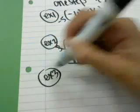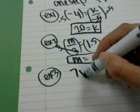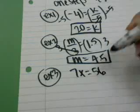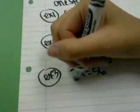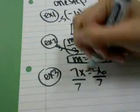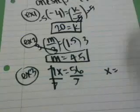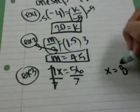Example three. If I have 7x equals 56, x is my variable that I want to isolate. What's happening to it is it's being multiplied by 7. The inverse of that would be to divide by 7. Those 7s cancel, and 56 divided by 7 is x equals 8.